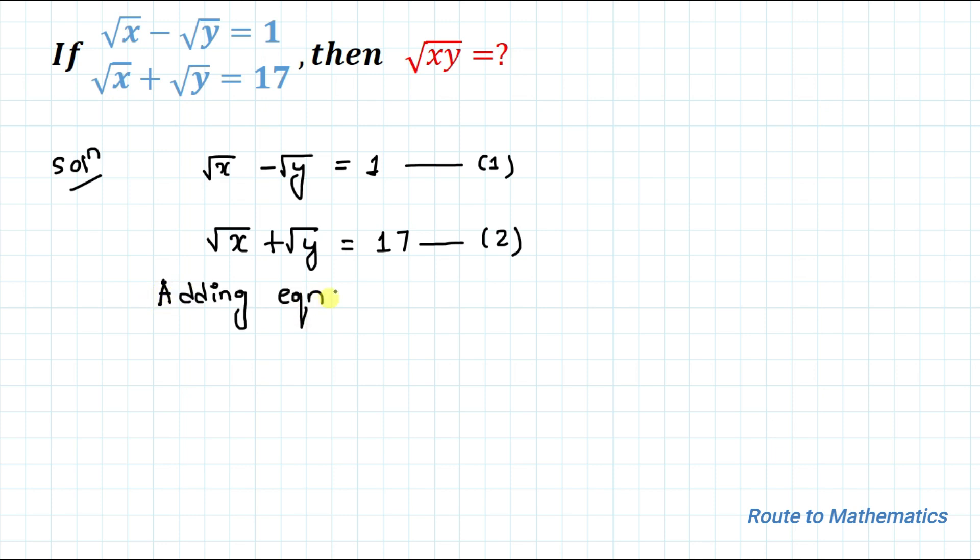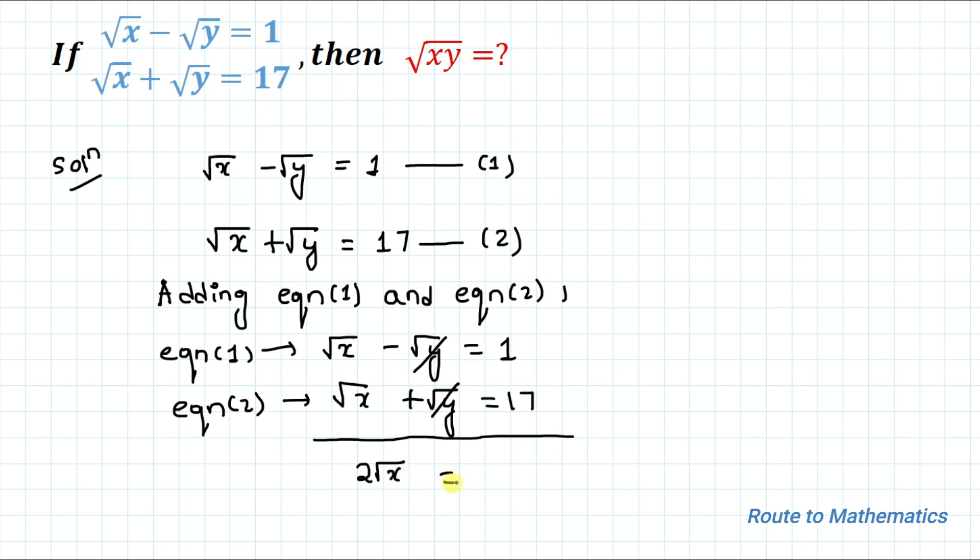Adding equation 1 and equation 2. Here you can see that in equation 1 we have minus root y and in equation 2 we have plus root y. By adding these, they cancel out, and root x plus root x gives us 2 root x equals 17 plus 1, which is 18.